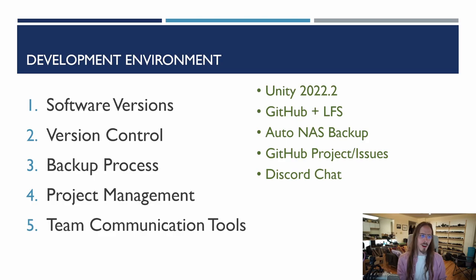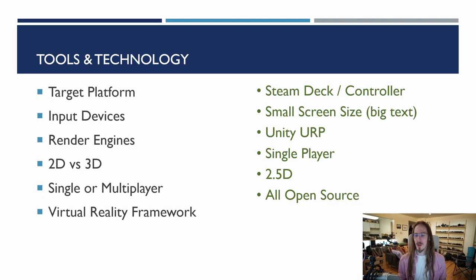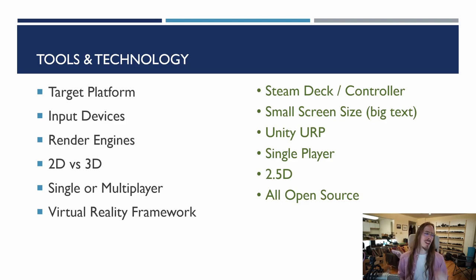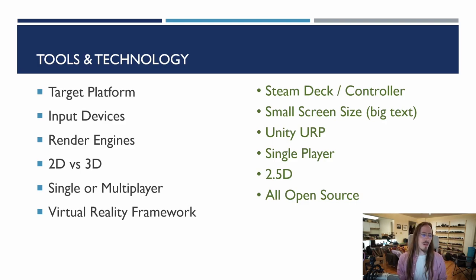Make some decisions to get started. Next are the tools and technology of your project. Are we using Universal Render Pipeline or High Definition Render Pipeline? Is the game going to be 2D or 3D? Single or multiplayer? You probably already have answers to these questions, but if you don't, you need to actually just write down the decision — whether you're using Ultimate XR, Unity's XR Interaction Toolkit, or something else. Decide that stuff right at the start.